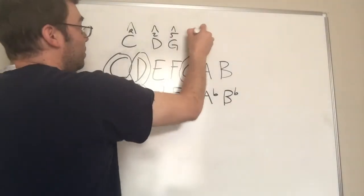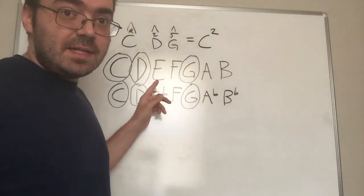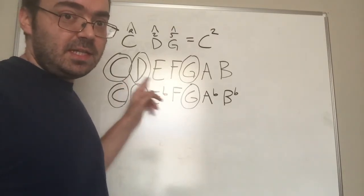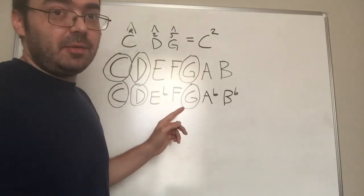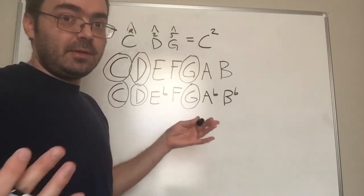Therefore, when you see a C two chord, you can improvise a melody or compose a melody using C major or C minor, because like I said, it's now tonally ambiguous, so it's not major or minor, it's both.